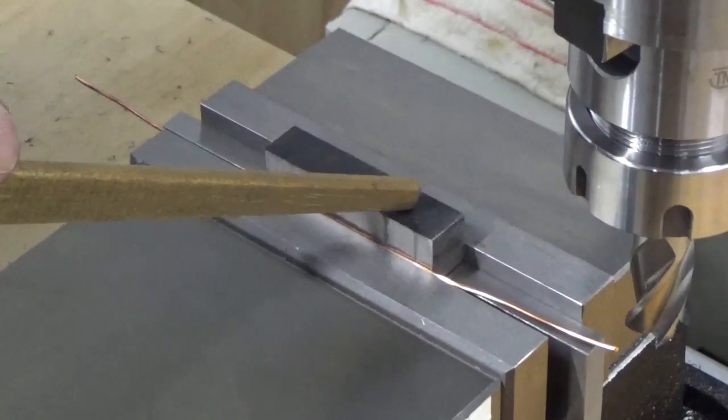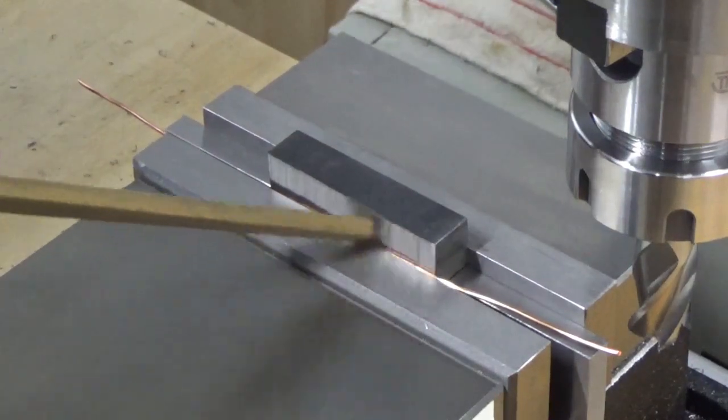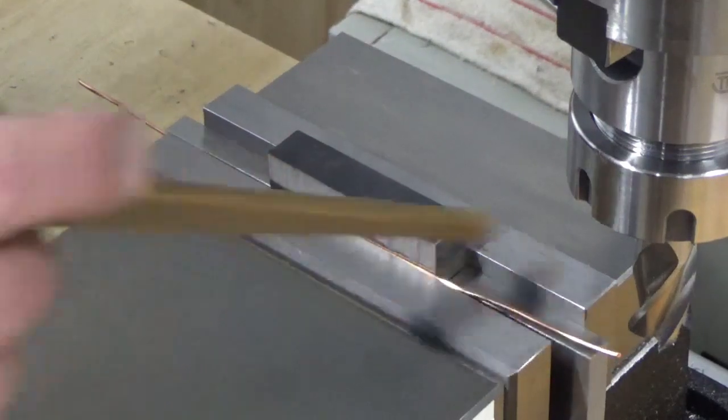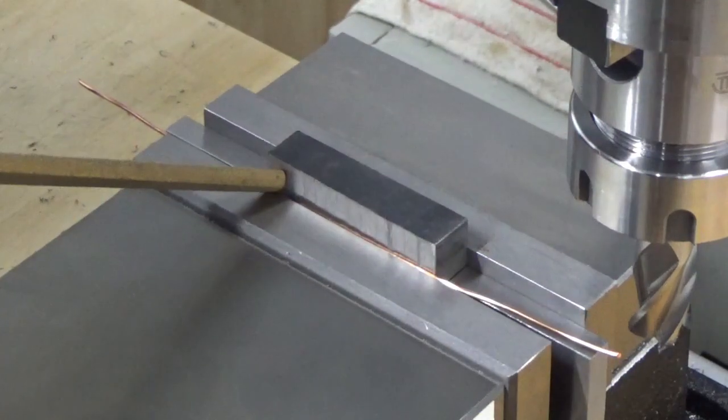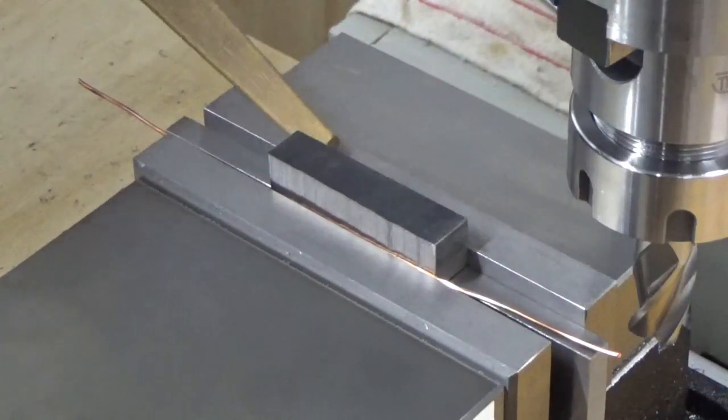Now this particular boring bar holder here, we've got a fairly uneven surface, so what we've done is put some copper wire in just to take up the unevenness on this side. Our surface height is against the back jaw.